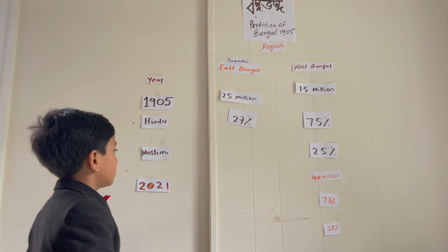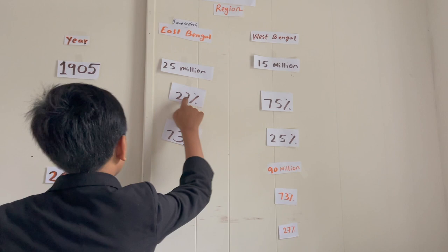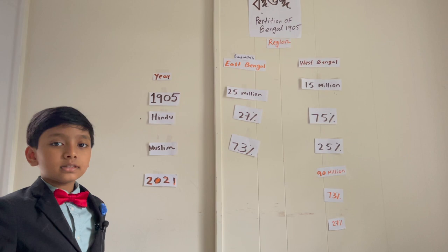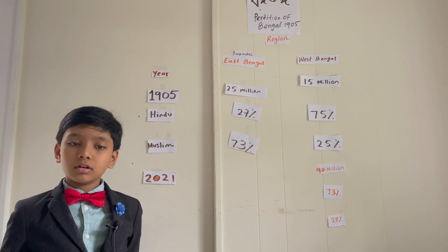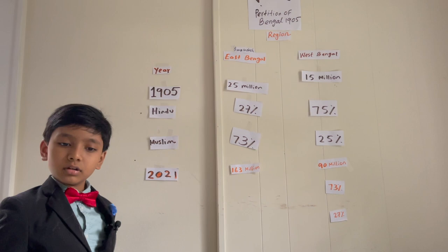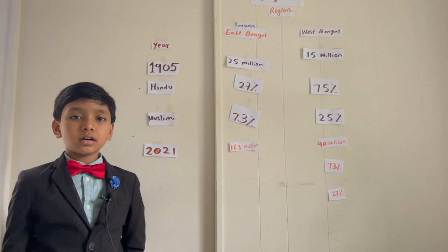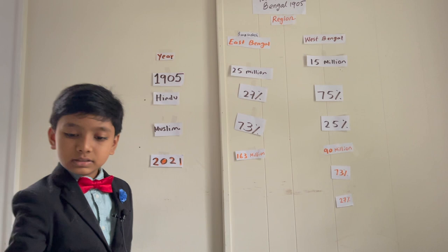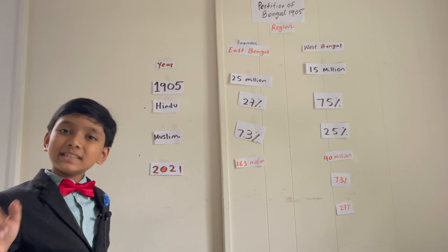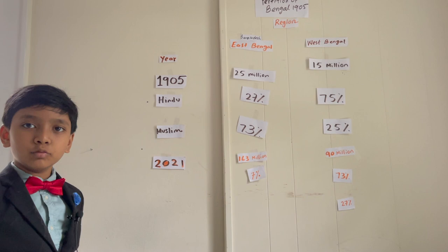You can see that Muslims are the minority in West Bengal but Hindus are the minority in East Bengal. What is the population of Bangladesh in present day 2021? The answer is 163 million. In present day Bangladesh, only 7 percent are Hindu — it's decreased even more — and Muslims make up 93 percent.